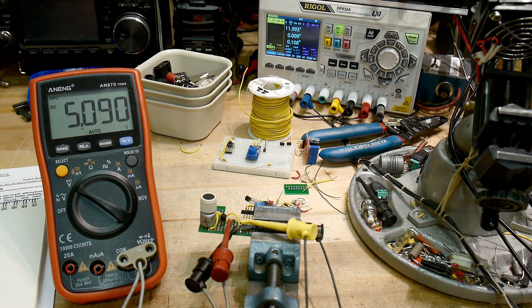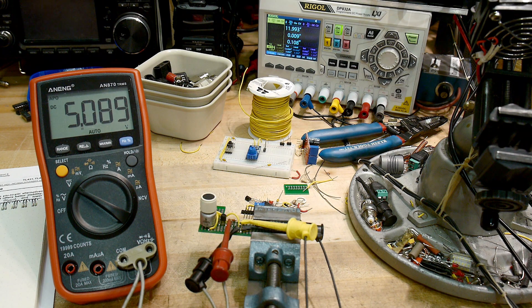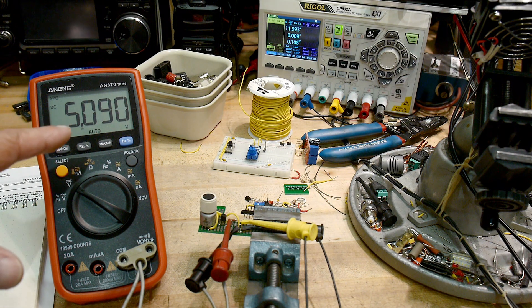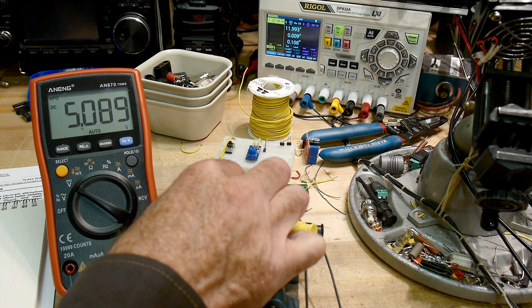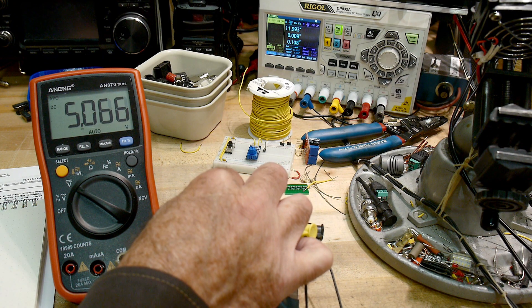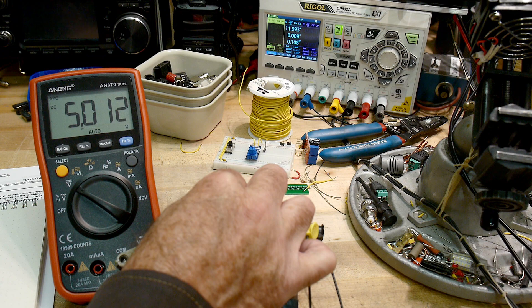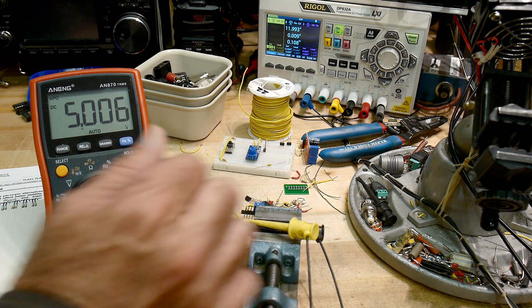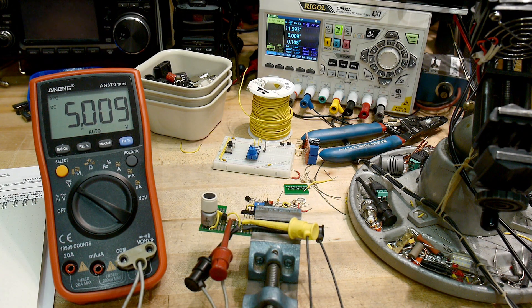Right now, the incoming voltage is 12 volts, actually 11.993. And our output is five point. Let's see if you can adjust it right around five, make this a little bit easier. If I can lower it down a little bit, it's a bit touchy because this is a single turn pot. There we go. 5.009.